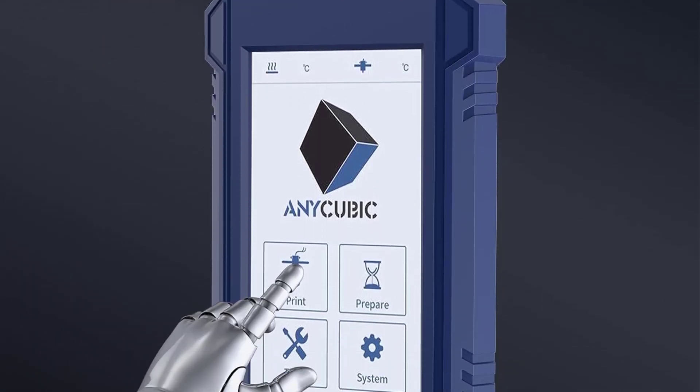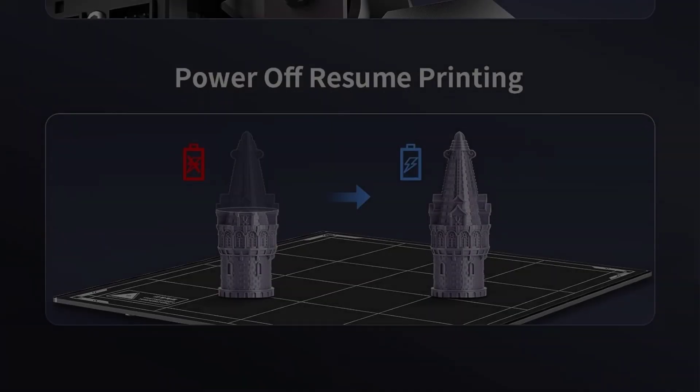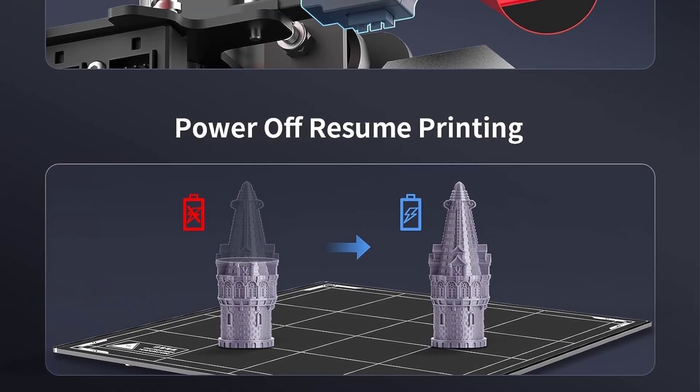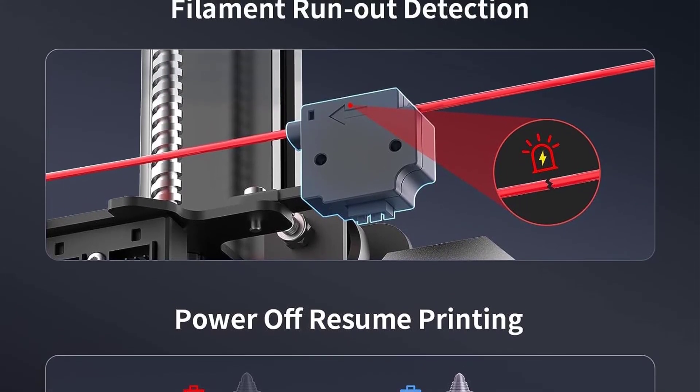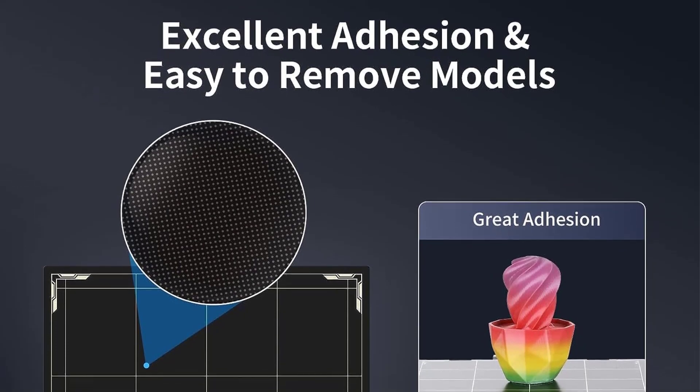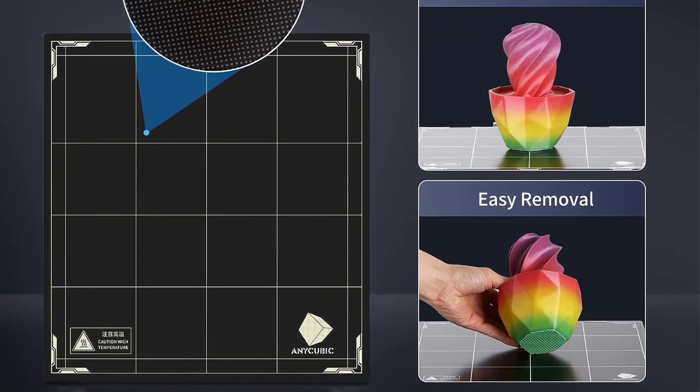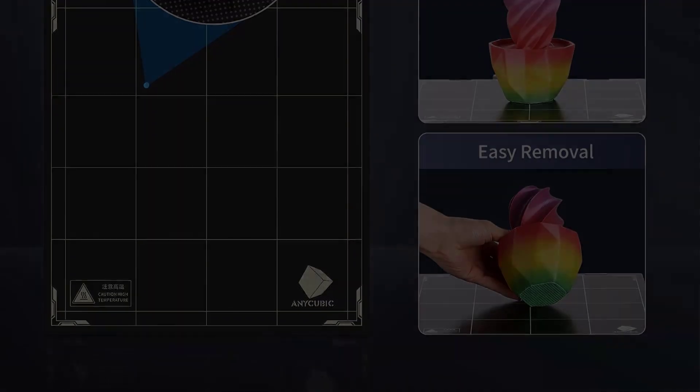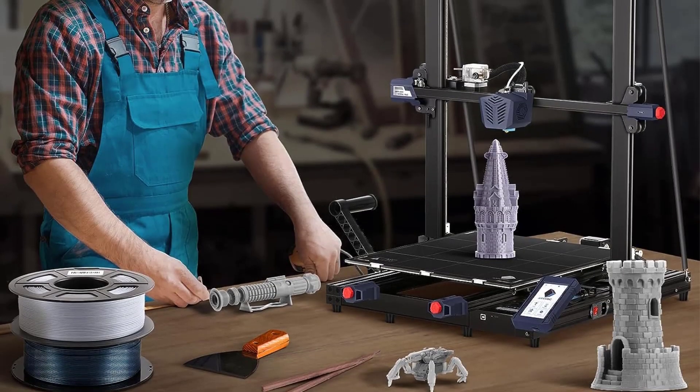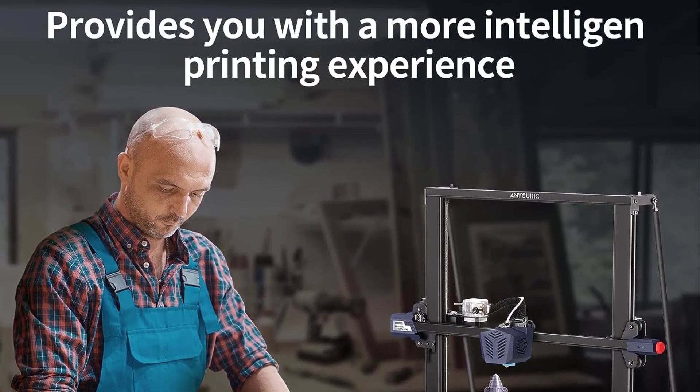For a printer designed to print big, Anycubic skimps out on the spool holder and provides one only capable of holding standard one kilogram spools. Likewise, you don't get a large bore nozzle to help cut full plate prints down from days to hours. Thankfully, both are easy, inexpensive fixes, but they're the small details that could have made the Cobra Max an even better out of the box experience, according to CNET.